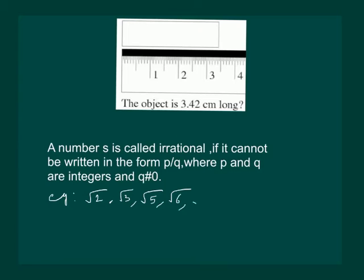Square root of 6, square root of 7, π, or a number like 0.101100111000... which is not ending and nor is it repeating.